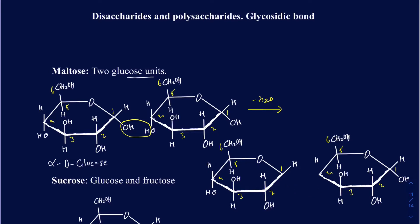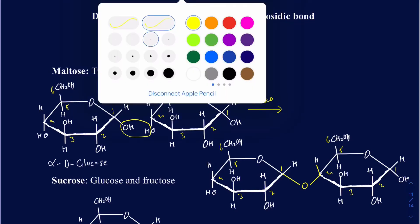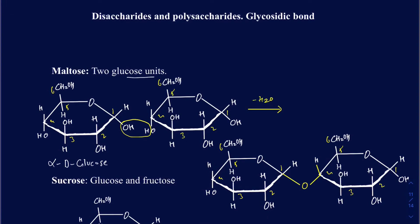You take out that bond, and all of a sudden you have this linkage — oxygen there and oxygen there. The two units are combining with one another at the first and fourth position. Since this first unit is the one containing the anomeric carbon, and since it's pointed down, you're going to be calling this an alpha — because with respect to the CH2OH and this pointed down, they are trans to one another. This is going to be called an alpha-1 to 4 glycosidic bond.